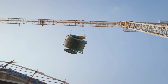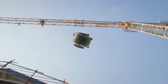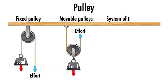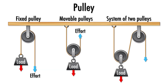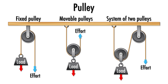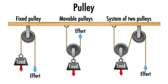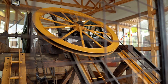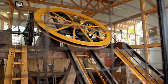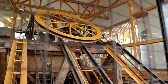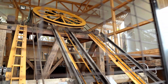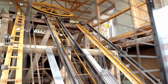Pulley systems are combinations of both fixed and moveable pulleys, working together to ease the work by altering the direction of the effort and reducing the required force, extending the distance over which it's applied. A common example of a pulley system is an elevator, where both fixed and moveable pulleys work together to lift and lower the cabin effortlessly.